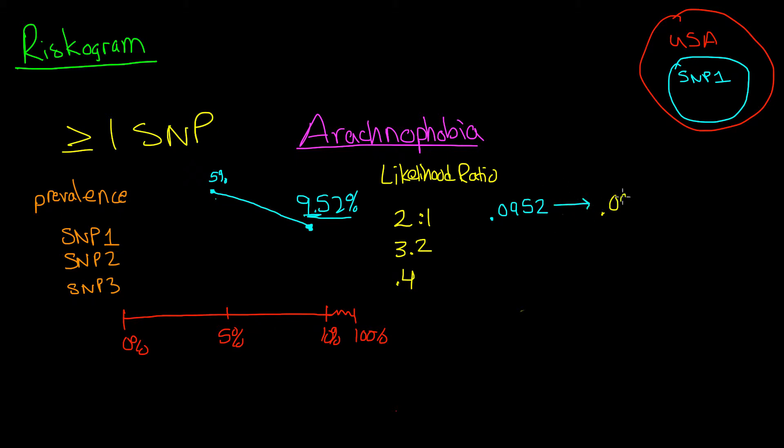We start with who has it to who doesn't have it. 0.0952 people have it, and the rest don't have it. And when we do the math out, we find that this is equal to 0.1052.